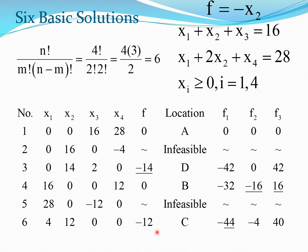The four feasible solutions correspond to vertex points A, B, C, and D on the graph. Comparing the function values at these vertices, the best value is minus 14, which is the optimal point.